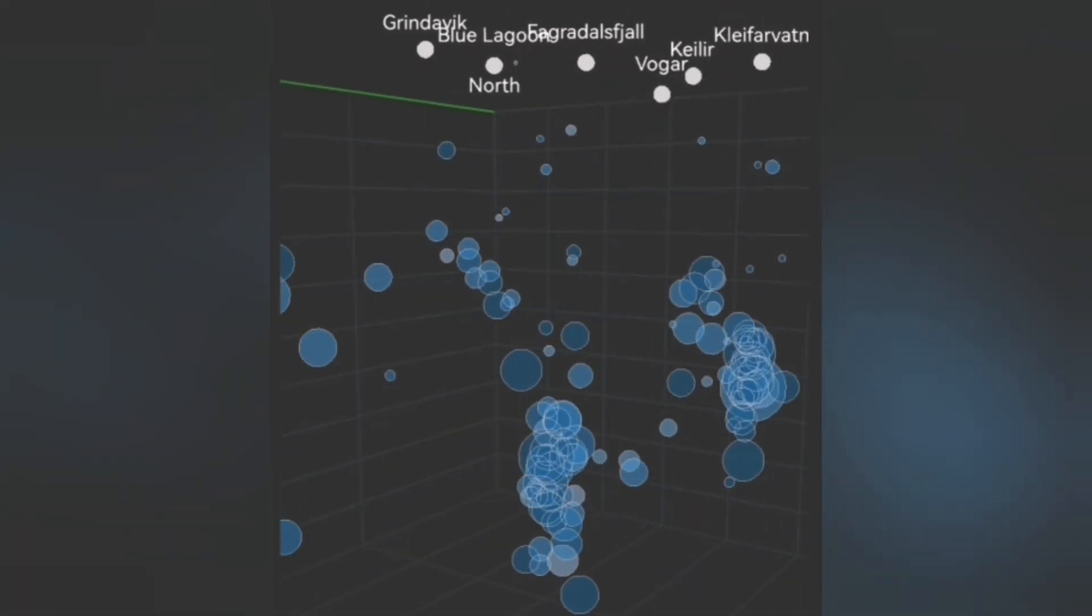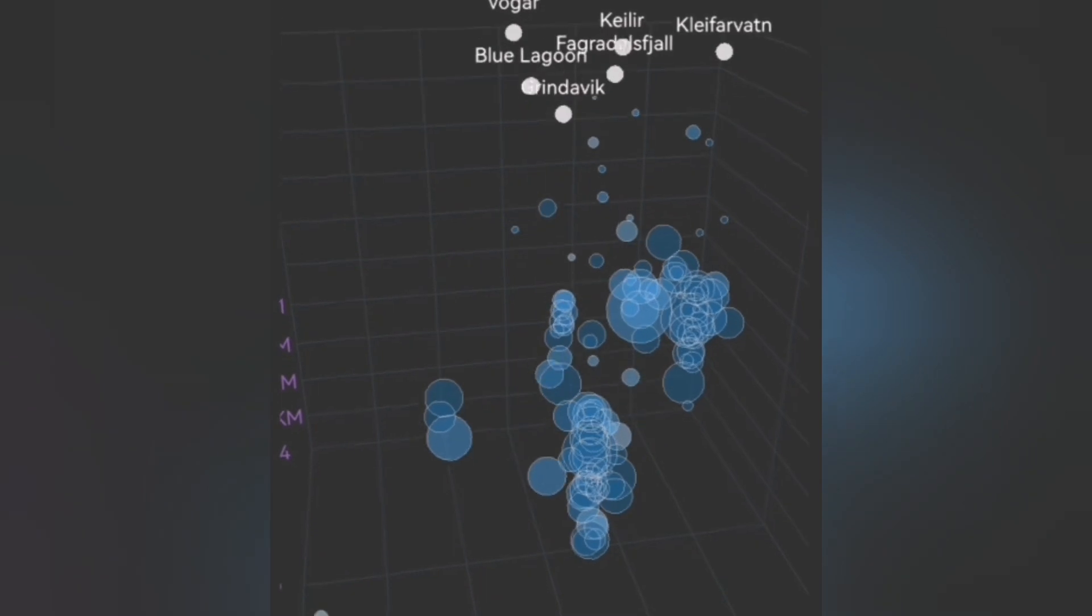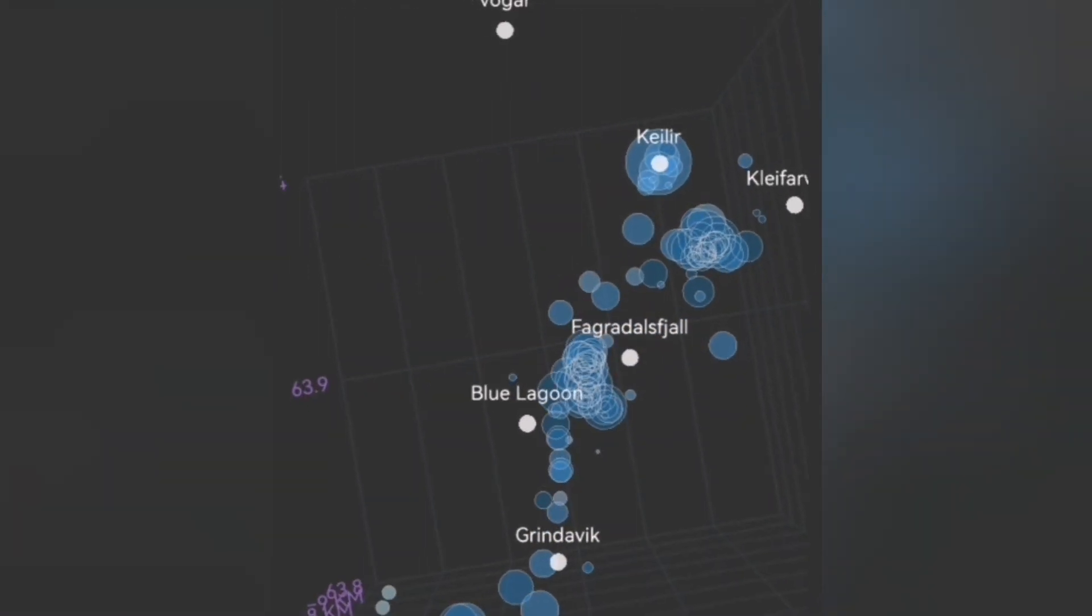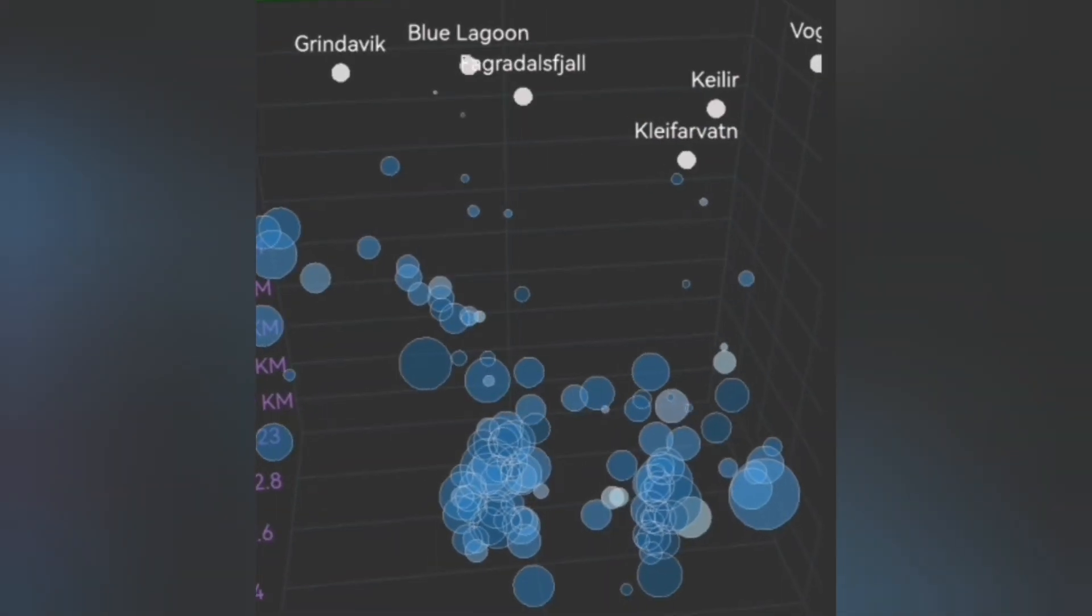You can see at the center the vertical beam of circles rising to the sky. Then from above, you can see that it is moving toward Grindavik.